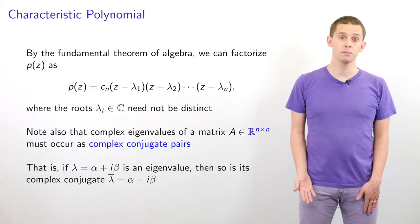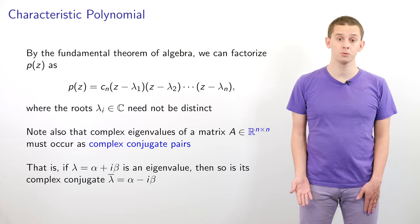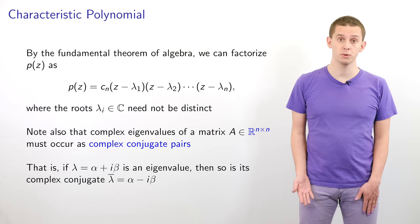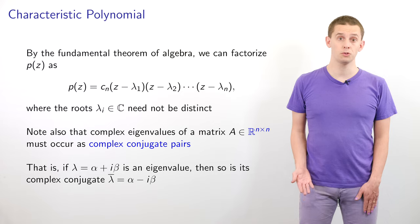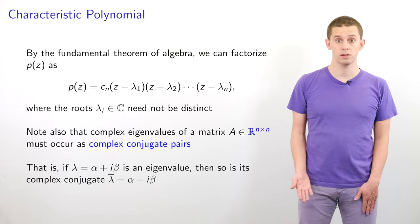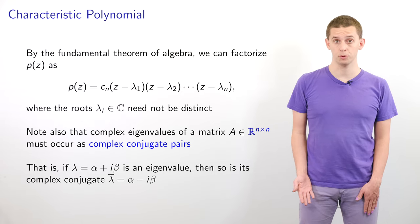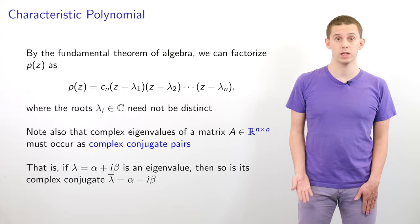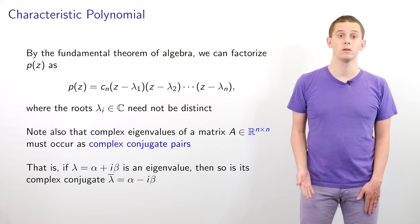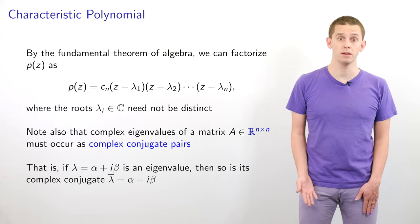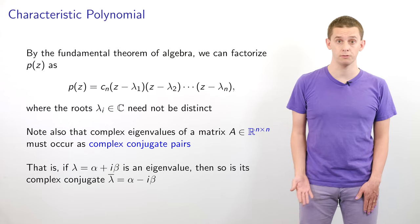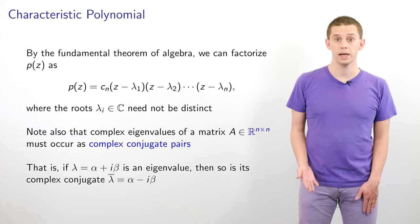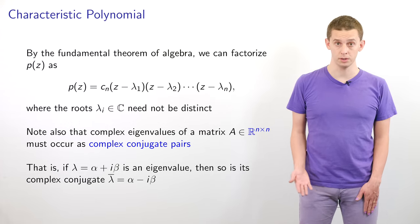By the fundamental theorem of algebra, we know that we can factorize p of z as equal to cn times z minus lambda 1 times z minus lambda 2 up to z minus lambda n. Here the lambda i are all of the different eigenvalues and cn is an arbitrary constant.